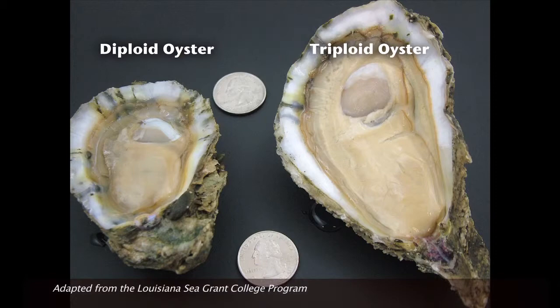Triploid oysters have several advantages. They grow faster, they're sterile, so they don't reproduce. If they don't reproduce, they're good for the environment because they don't interbreed with the wild population.